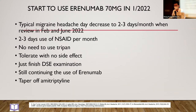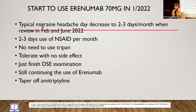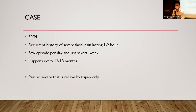This patient was started on one of the common monoclonal antibodies. Her typical migraine headache days decreased to two to three days, compared with eight to ten days before the injections. When reviewed in February and June, her actual headache days decreased significantly, with much less use of NSAIDs per month. She no longer needed triptans for acute attacks. She tolerated the monoclonal antibody injection well with no side effects, completed her DSE examination, and was able to taper off amitriptyline which had previously caused significant side effects.